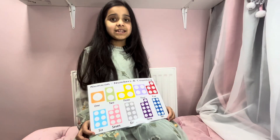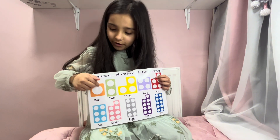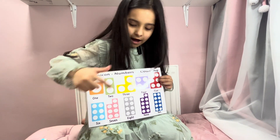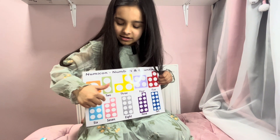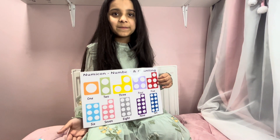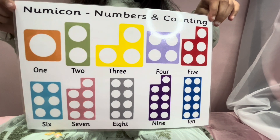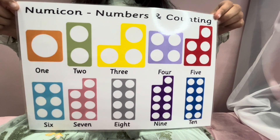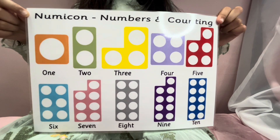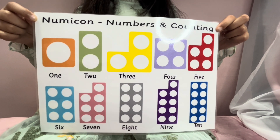These are the numicon numbers. Let's count: one, two, three, four, five, six, seven, eight, nine and ten. Do you want to count with me? One, two, three, four, five, six, seven, eight, nine, ten.